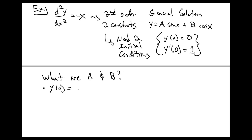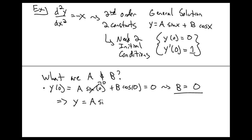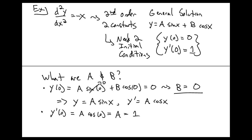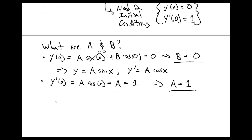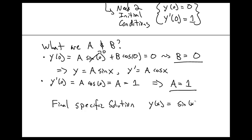What are a and b given these initial conditions? We just impose each initial condition individually. At x equal to 0, the only term that contributes is the term with b. In order for the initial condition to be 0, b must be 0, so we're left with y equal to a·sin(x). y′ is then a·cos(x), and using the second initial condition, we find that a is equal to 1. So the final specific solution, given these two initial conditions, is just y equal to sin(x).